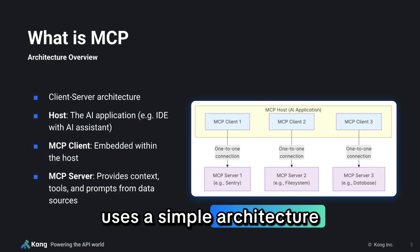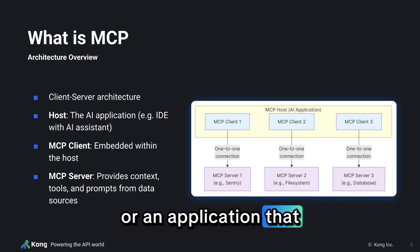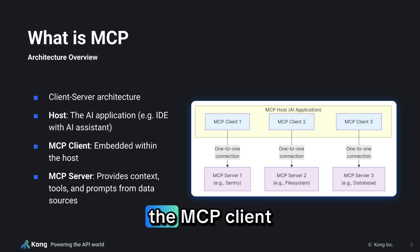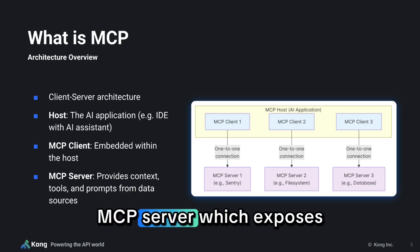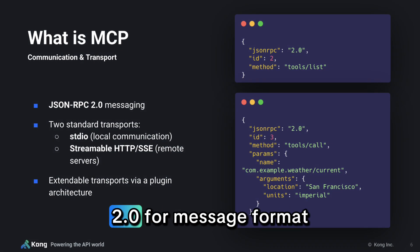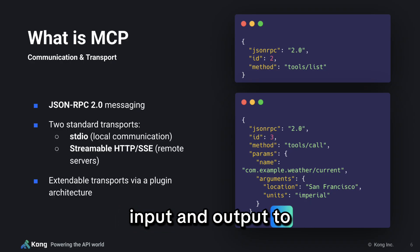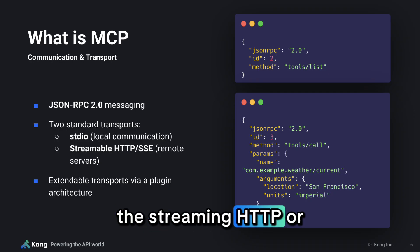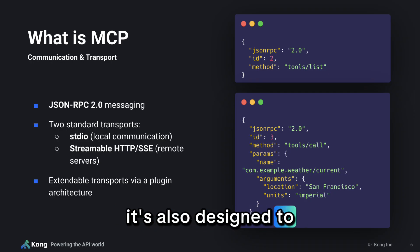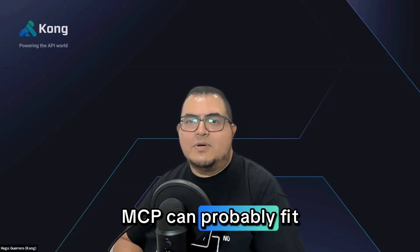At its core, MCP uses a simple architecture. You've got your host — like an IDE as originally designed by Anthropic, or an application that includes AI agents. Inside that host is the MCP client. It talks to an MCP server, which exposes tools, data, and prompts that the model can use. This clear split keeps things modular and easy to scale. MCP uses JSON RPC 2.0 for message format. If you're running locally on your laptop, it can also use standard input and output to access local resources. If you want to use it remotely, you can go with streaming HTTP or server-sent events. It's also designed to be extended with custom plugins, so no matter what environment you're in, MCP can probably fit right in.